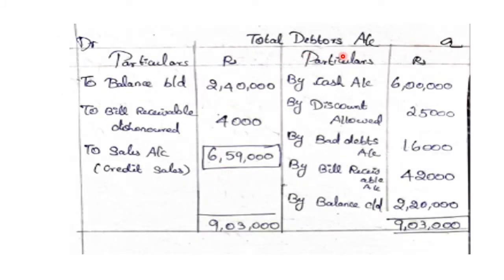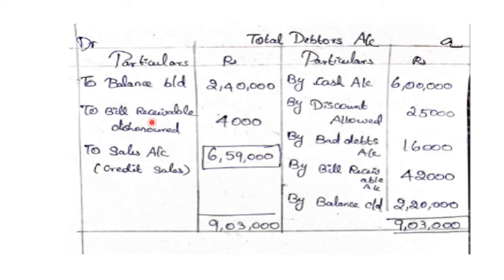Total Debtors Account: opening balance is $2,40,000. Bills receivable dishonoured transferred back to debtors is $4,000.